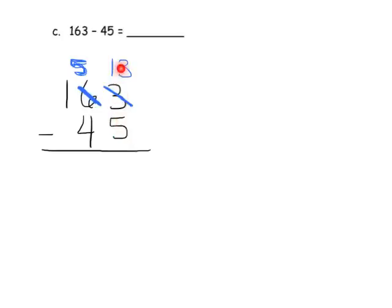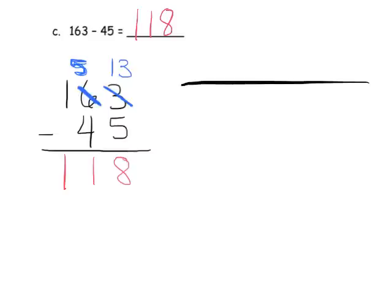Now we can take five from thirteen — thirteen minus five gives us eight. Then we have five tens take away four tens; no unbundling necessary, so we have one ten left over. In the hundreds place we start with 100 and take away nothing, so we're left with 100. Our answer is 118. Now we're going to model that to make sure we've done it correctly.